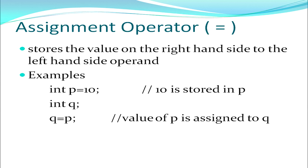Next we have the assignment operator, which we have used in previous examples. It stores the value on the right-hand side of the operator to the left-hand side operand. For example, the value 10 on the right-hand side is stored in p on the left-hand side. Similarly, the value of p is assigned to q which is on the left-hand side.